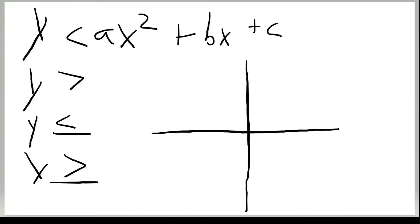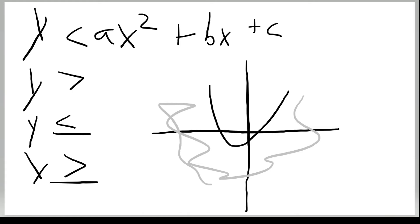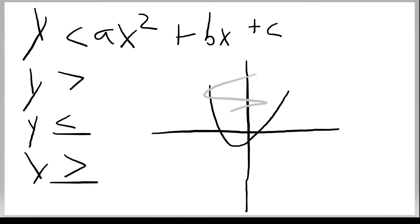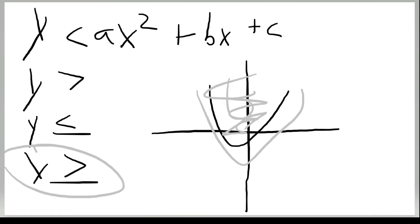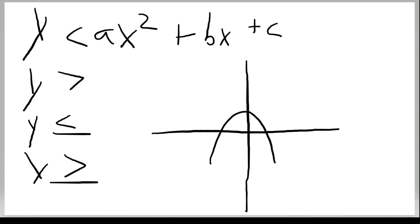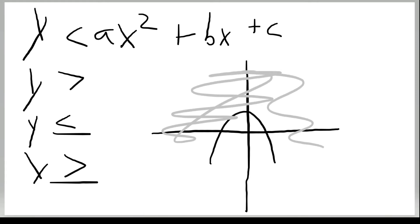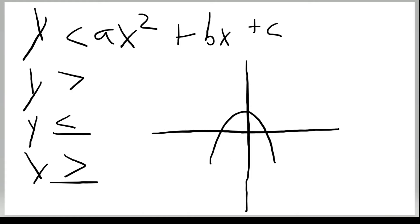For the other two types with solid lines (less than or equal to, greater than or equal to): if the graph has shading on the outside, y is less than or equal to the function. If shading is on the inside, y is greater than or equal to. For a flipped parabola, shading on the outside means y is greater than the function, and inside means y is less than.